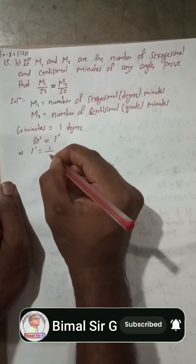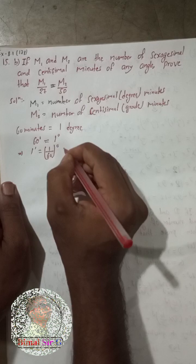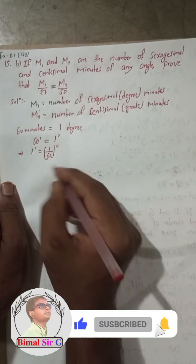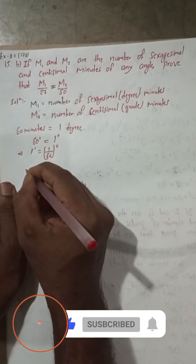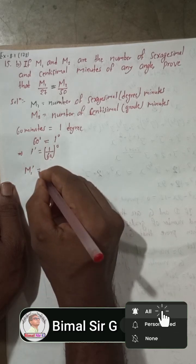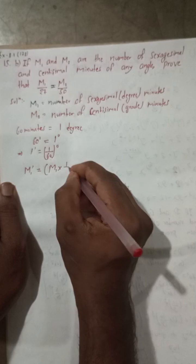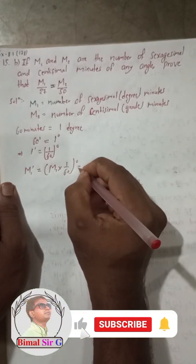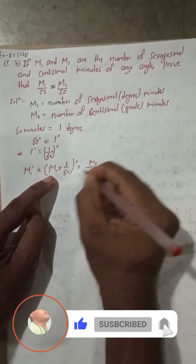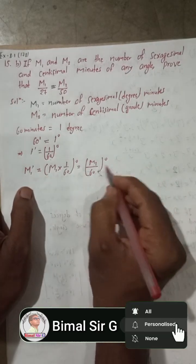By the unitary method, one minute is equal to 1/60 of a degree. Therefore, in place of one minute, if I write m1 minutes, it will be m1 multiplied by 1/60 degree — that means m1 minutes equals m1/60 degrees.